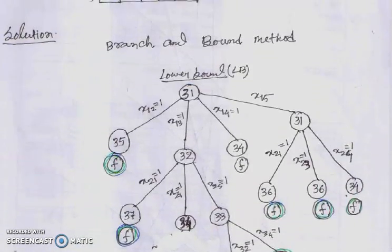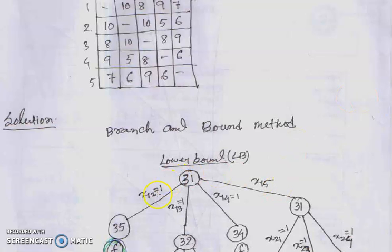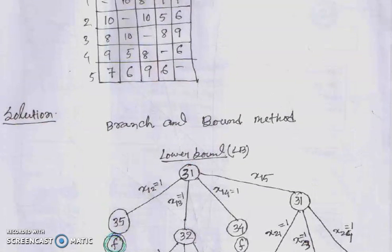Summarizing the first level of branching: x12 gives cost 35, x13 gives 32, x14 gives 34, and x15 gives 31. This completes the first level of branching. The second level will be discussed in the next lecture. It is important to follow both lectures together to understand the complete problem. Thank you.